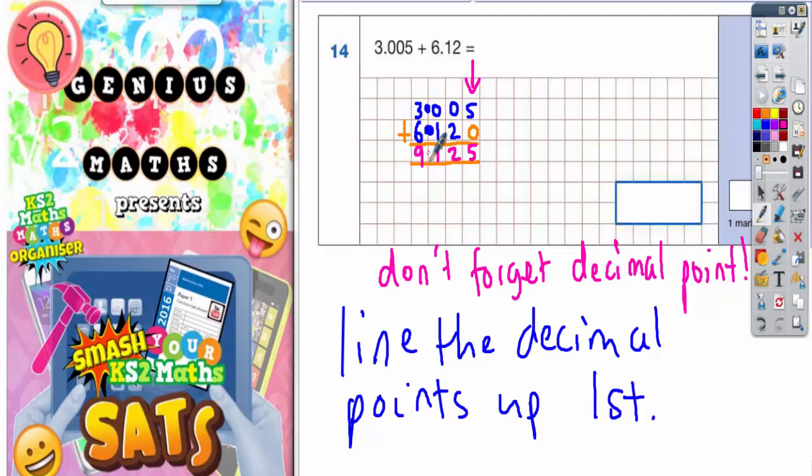Because the decimal points are lined up here, the decimal point of the answer lines up as well, so it would have to be there. Your final answer is 9.125.